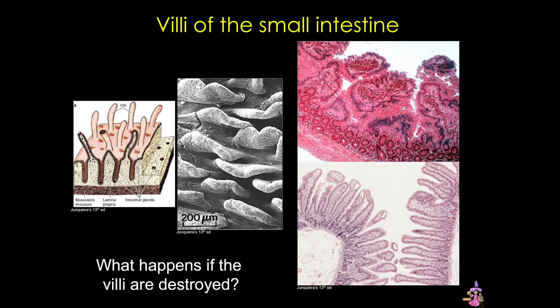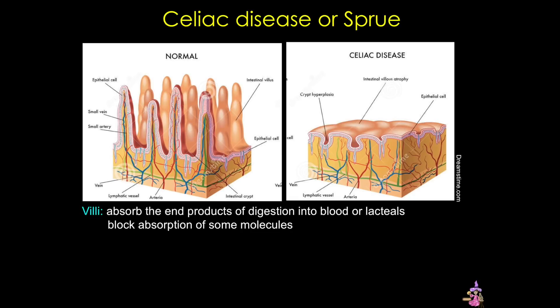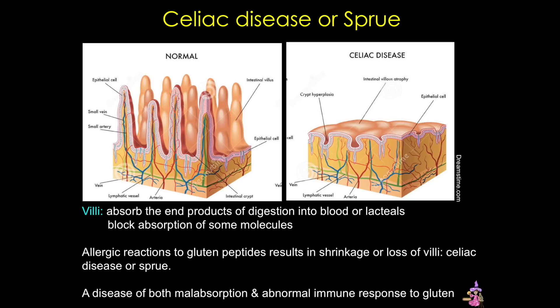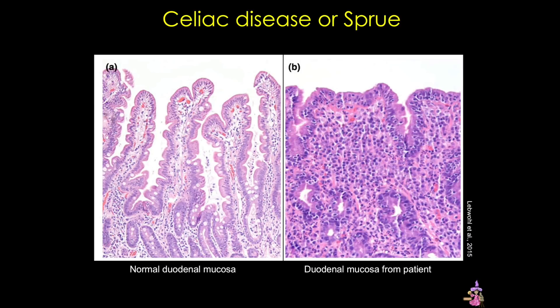What happens if those villi are destroyed? If you guessed a decrease in the absorption ability of the small intestine, you'd be correct. Normally, villi absorb the end products of digestion into the blood or the lacteals — the lymphatics in the lamina propria. In celiac disease, these villi are lost or destroyed, which greatly decreases absorption. Here are two H&E stained sections of small intestine, and you can note the blunted villi in the mucosa of the celiac patient.